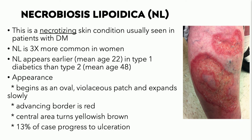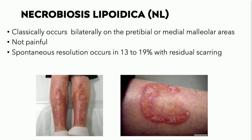NLD is three times more common in women. About 13% of cases ulcerate without treatment, and it can be treated somewhat adequately with topical and intralesional corticosteroids. There are new studies looking at topical Janus kinase inhibitors, systemic JAK inhibitors, and topical calcineurin inhibitors. It classically occurs bilaterally on the anterior tibial regions, and spontaneous resolution occurs in just under 20% of cases.